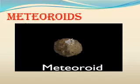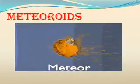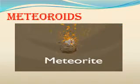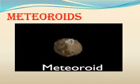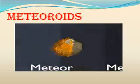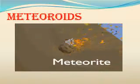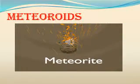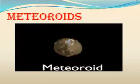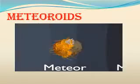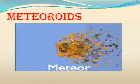Meteoroids are small pieces of rocks which move around the Sun. Sometimes these meteoroids come near the Earth and tend to drop upon it. During this process, due to friction with the air, they get heated up and burn, causing a flash of light. Sometimes a meteor, without being completely burned, falls on the Earth and creates a hollow.